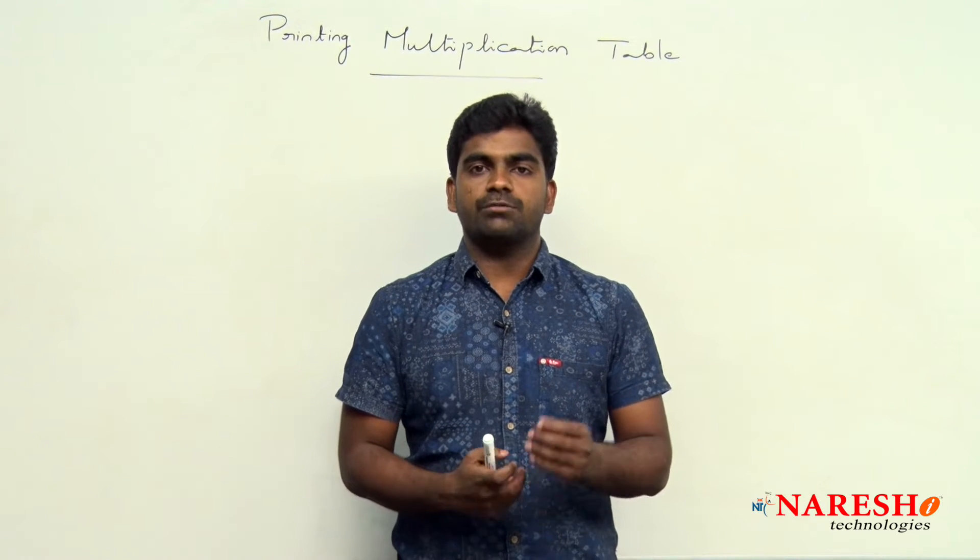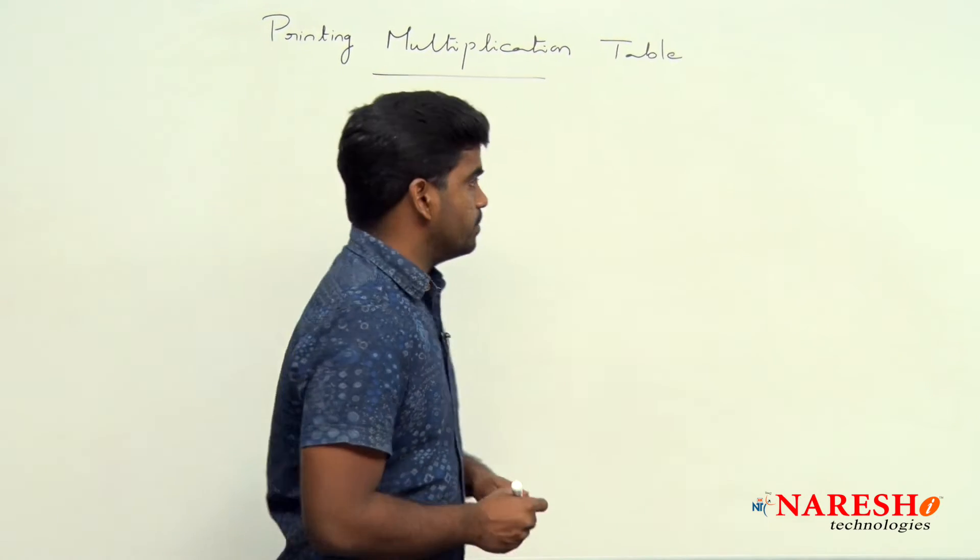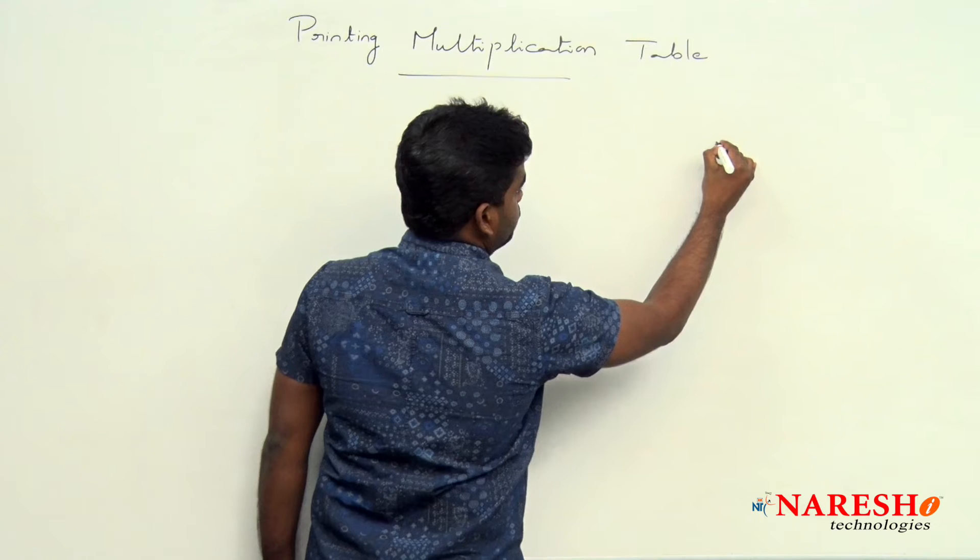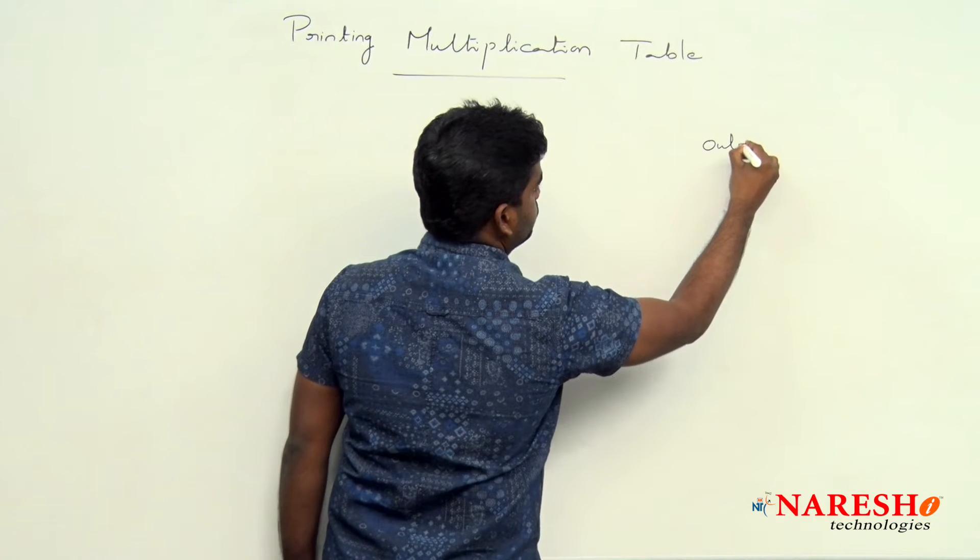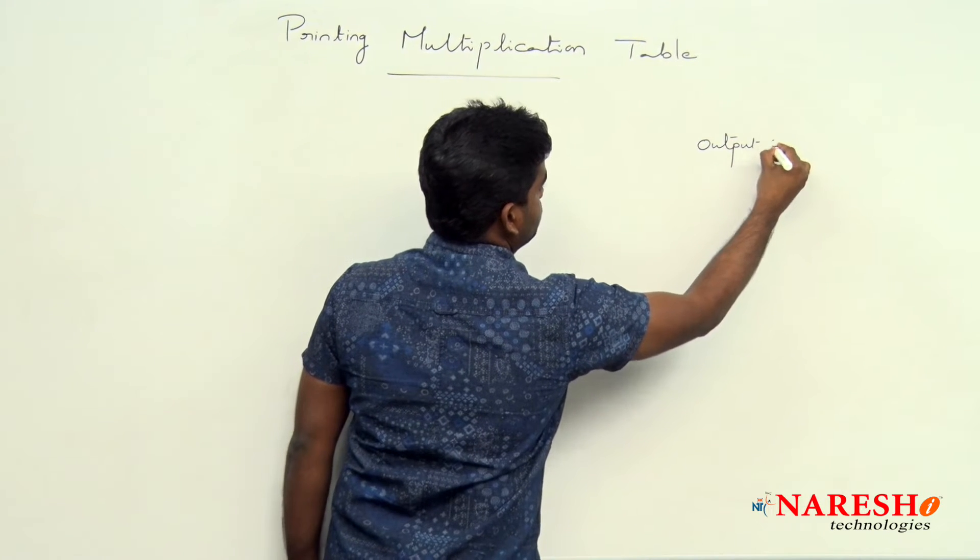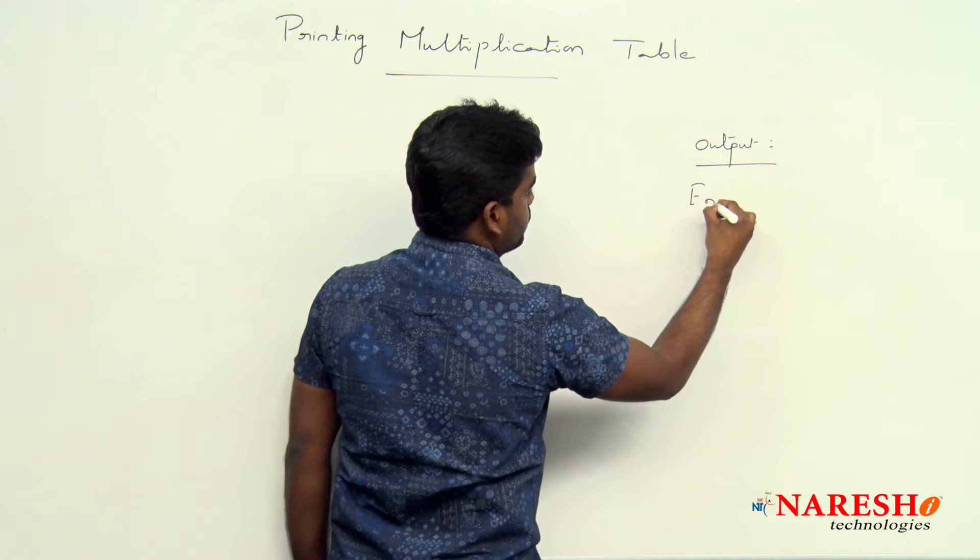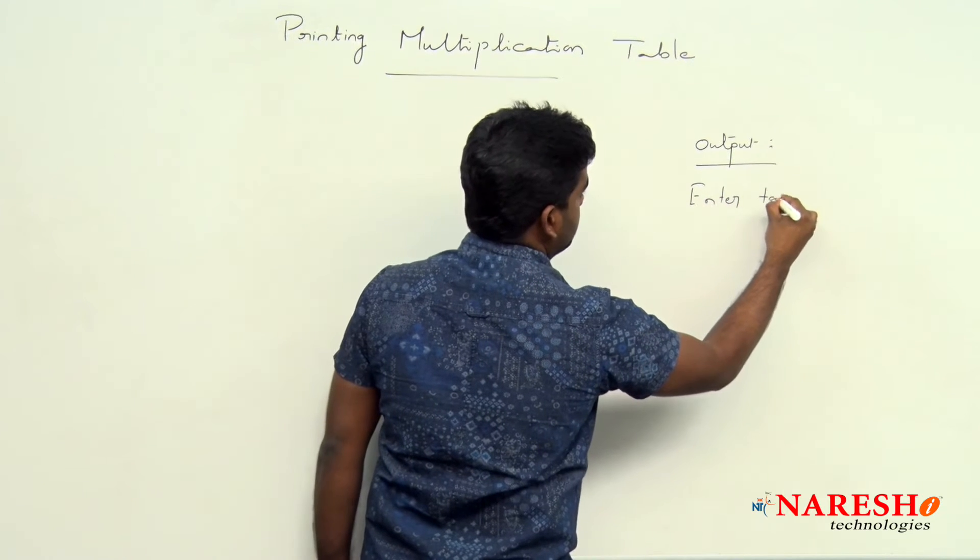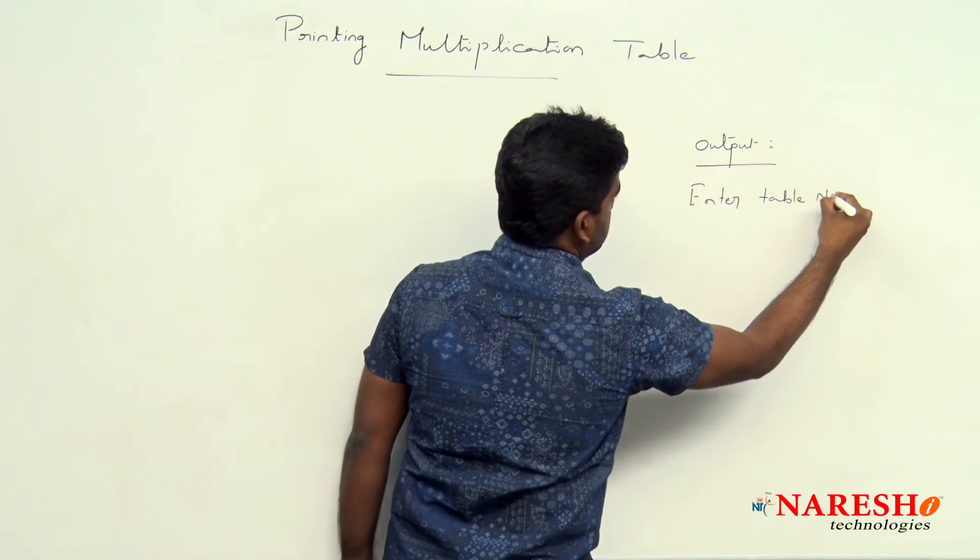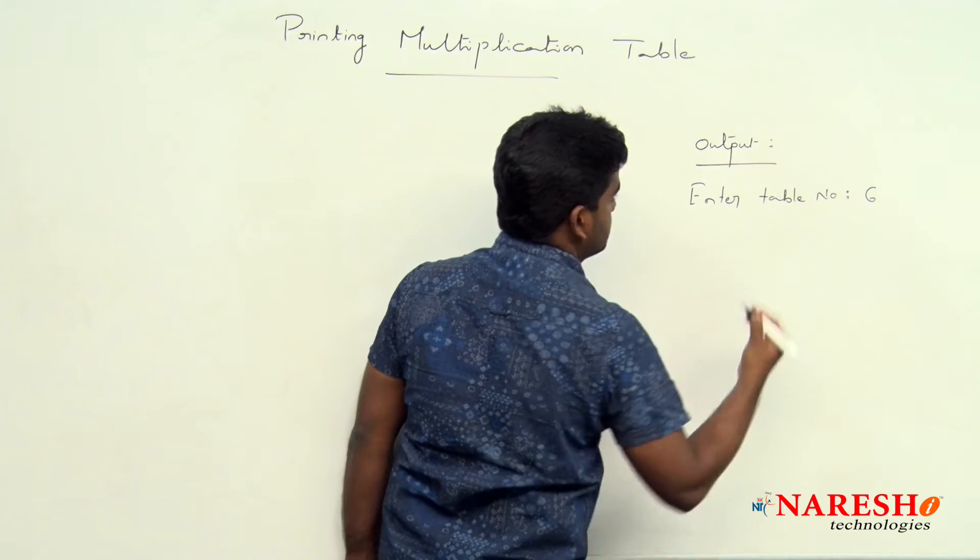Here we are going to use a for loop. Based on the output, suppose in the output first we are displaying enter table number. Suppose if the number is 6, consider that sixth table we need to display.